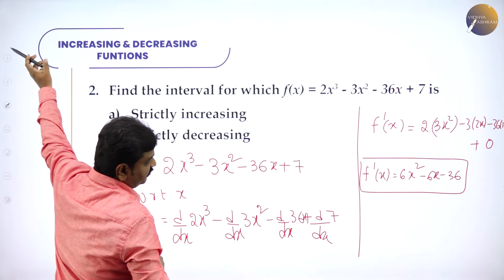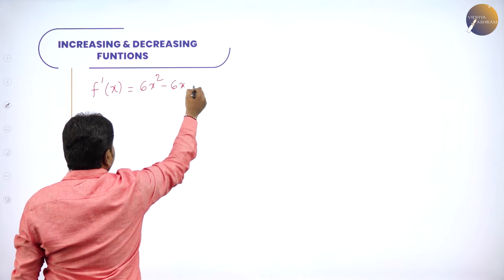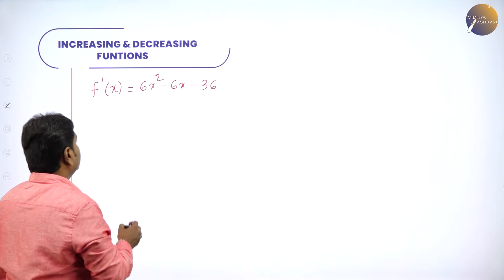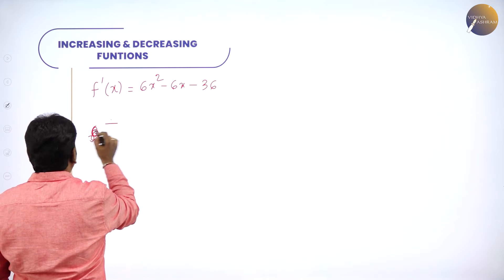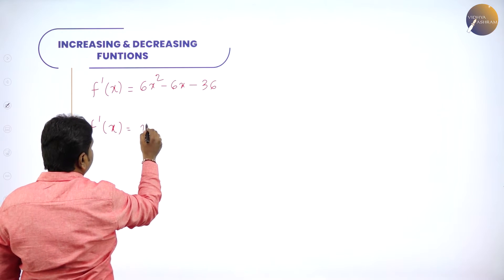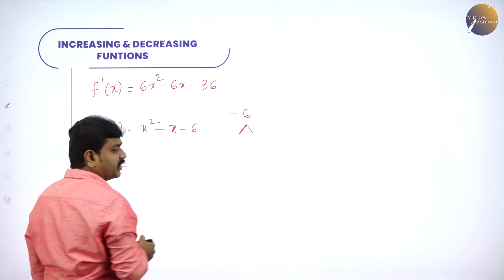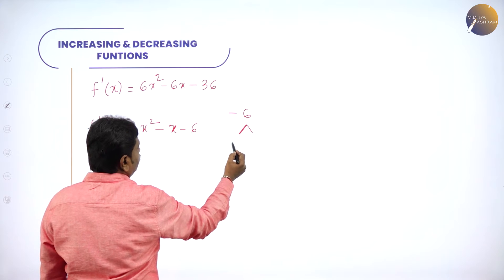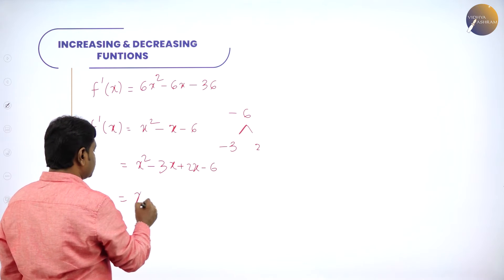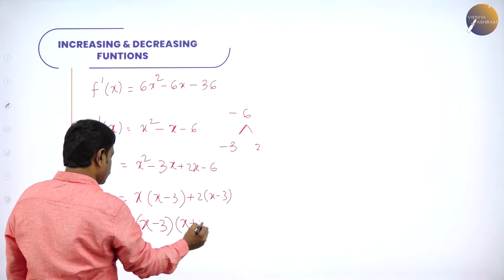f'(x) = 6x² − 6x − 36. Since it is degree 2, we factorize. Dividing by 6: f'(x) = 6(x² − x − 6). Now factorize x² − x − 6: factors for −6 with sum −1 are −3 and +2, giving x² − 3x + 2x − 6, which factors as x(x − 3) + 2(x − 3) = (x − 3)(x + 2).